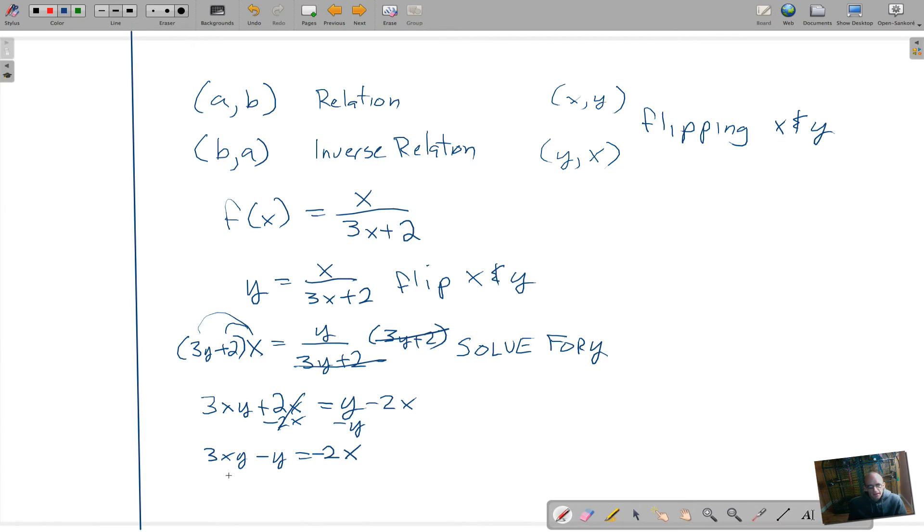Then we can factor the y. So you get y(3x minus 1) equals negative 2x. And then obviously to get rid of this you divide (3x minus 1) on both sides. And you end up with y equals negative 2x over (3x minus 1).